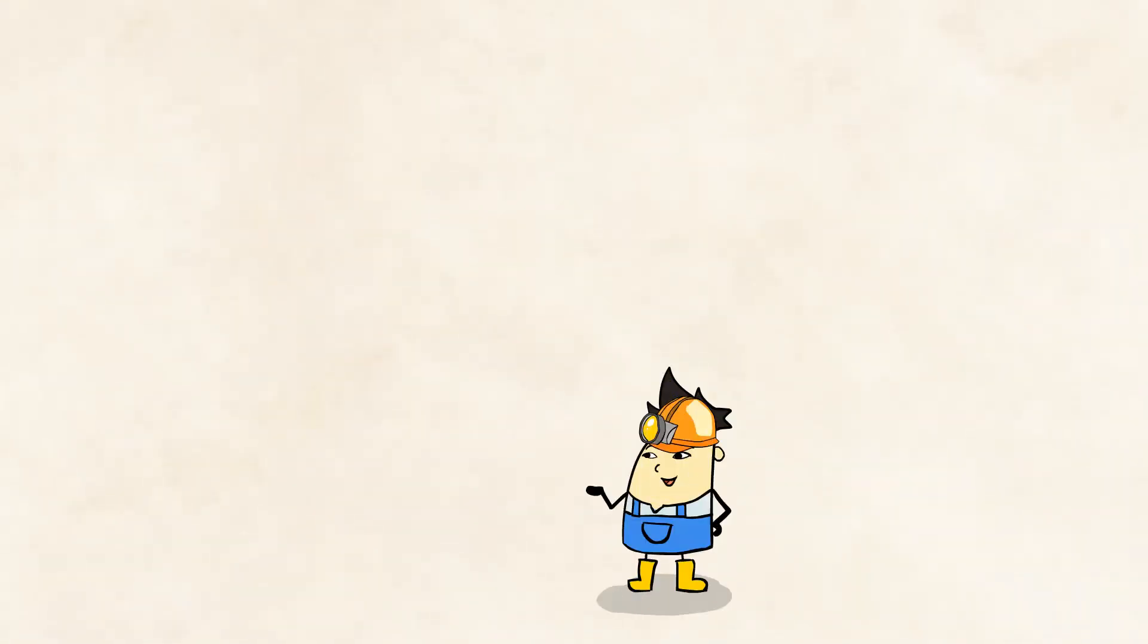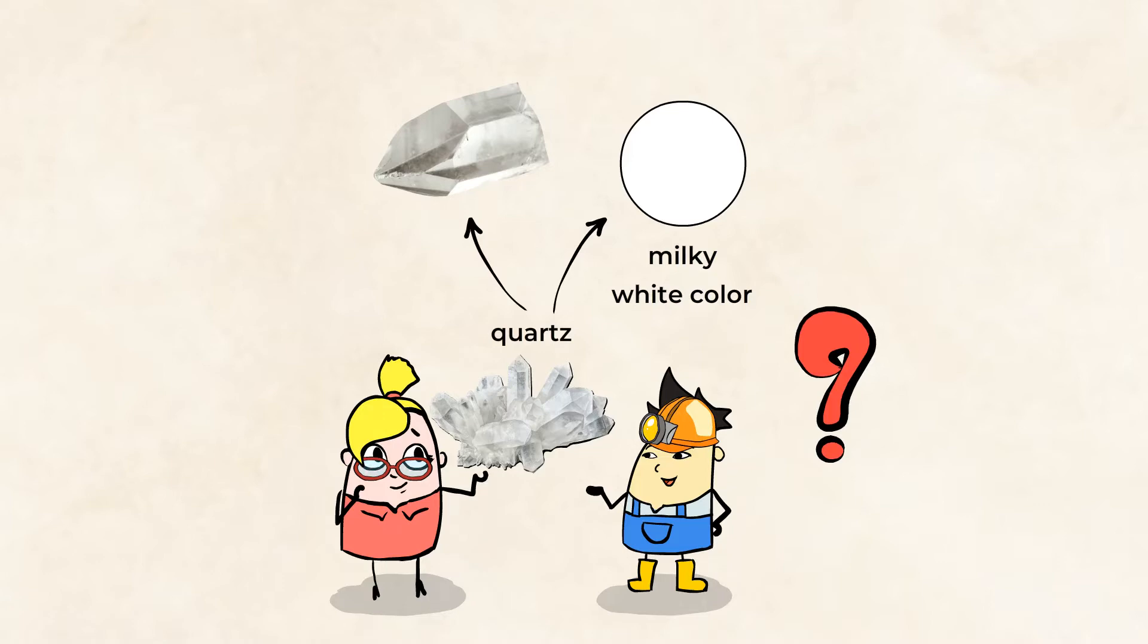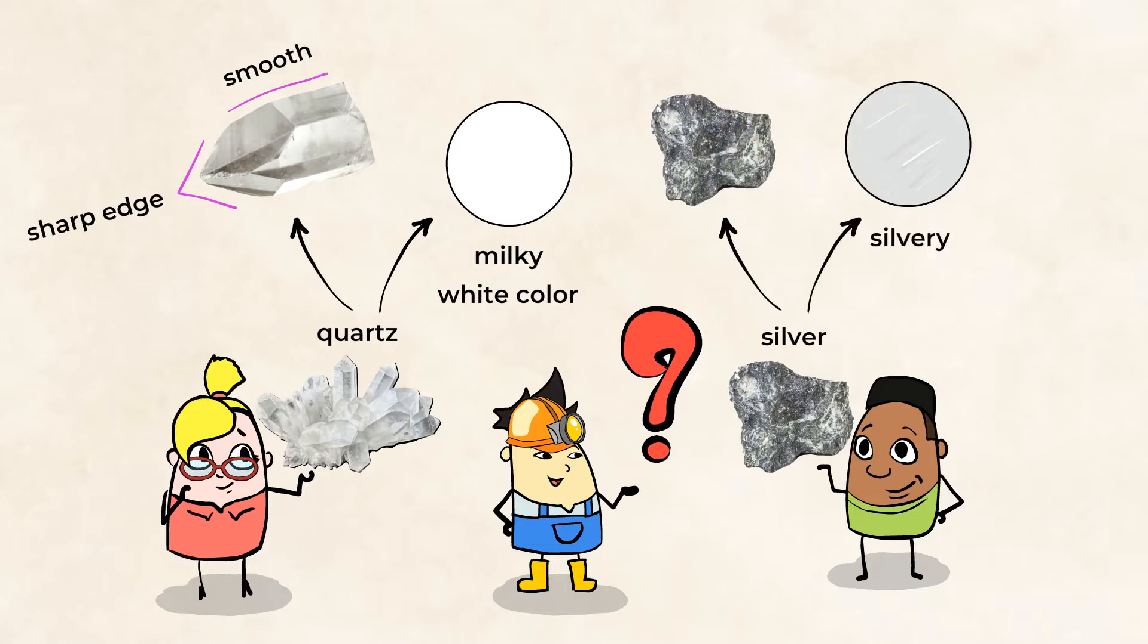What do you observe in this piece of quartz? Can we describe the color? That's right, it's a light, milky white color. And what about the texture of this mineral? Right again, it looks smooth in some areas with sharp edges. And how about this silver here? What do you observe? What color is it? Great, it's very silvery. And the texture? Yep, you guessed it. It's bumpy and rough with no smooth areas.